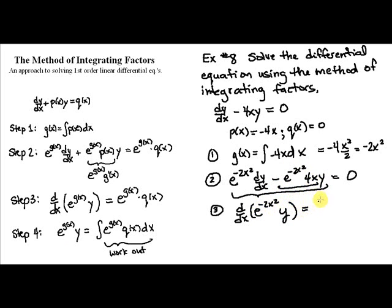Now we take the anti-derivative of both sides, that's the fourth step. So that leaves us with e to the negative 2x squared y equals the anti-derivative of 0. What do you differentiate to get 0? Any constant c.